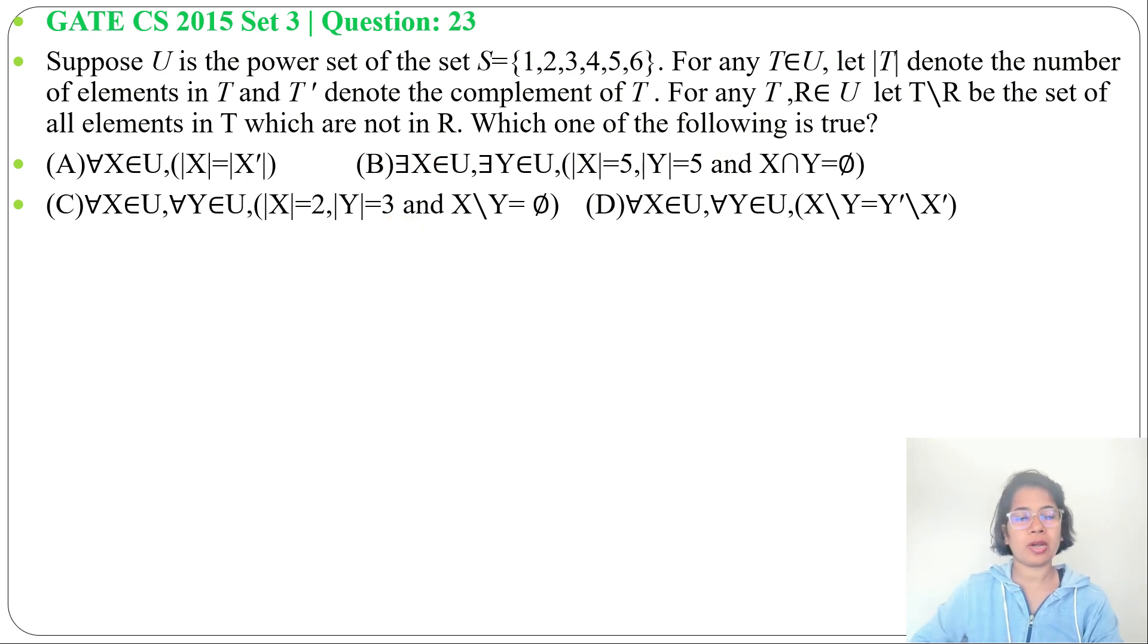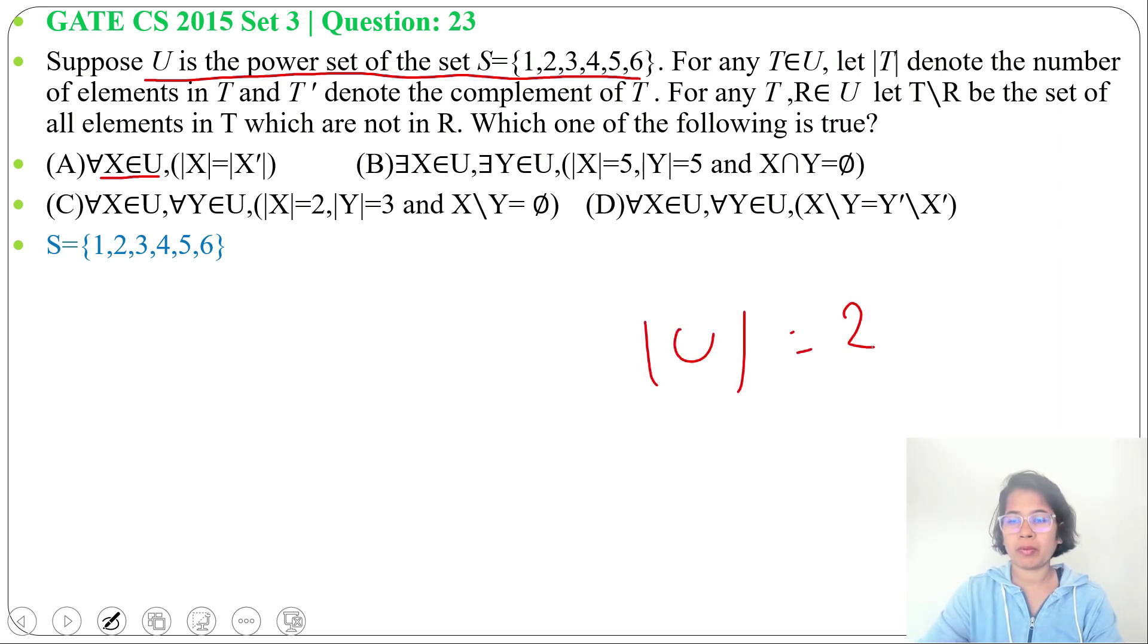Let's check one by one option. Option A: for all X belongs to U, |X| equals |X'|. Here, S contains 1, 2, 3, 4, 5, 6. And X belongs to U. And what is U? U is the power set of set S. So, U cardinality will be 2^6, it's 64. So, for all X belongs to U, U contains 64 elements. |X| equals |X'|. It's wrong.